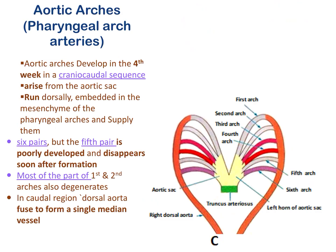Initially there is the first aortic arch artery connecting the dorsal aorta and the aortic sac formed by the fused ventral aorta. Gradually, six aortic arch arteries develop in the fourth week, and they are named craniocaudally: one, two, three, four, five, and six — a sixth pair of aortic arch arteries.